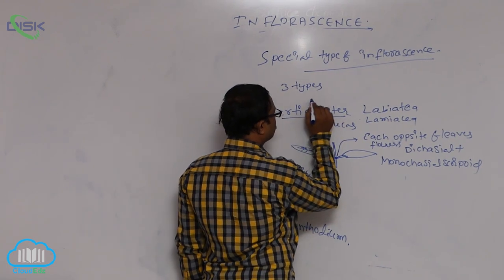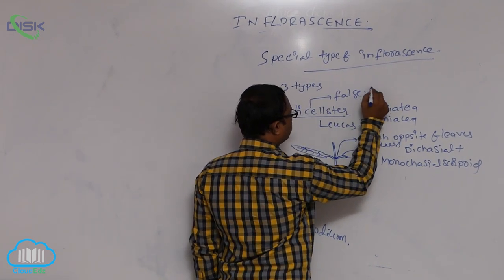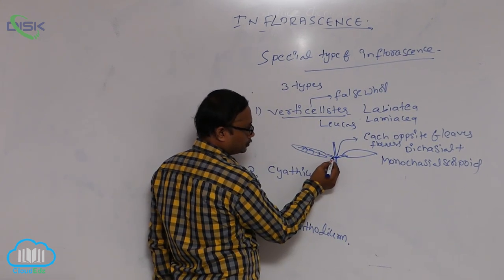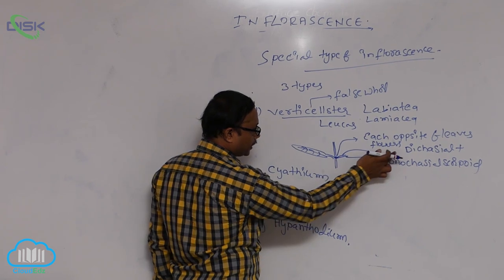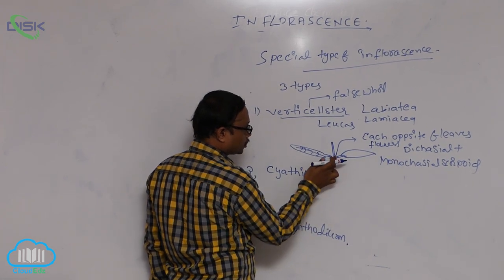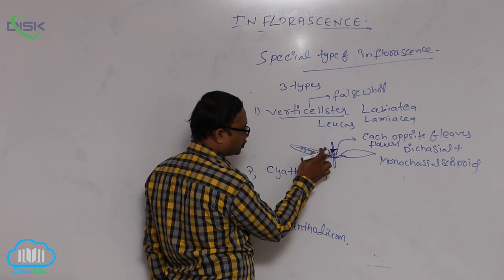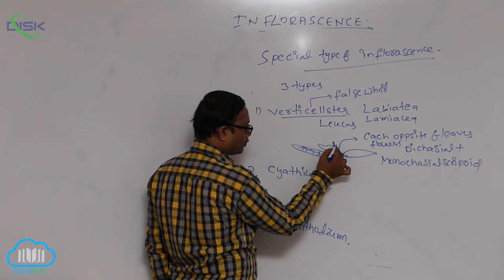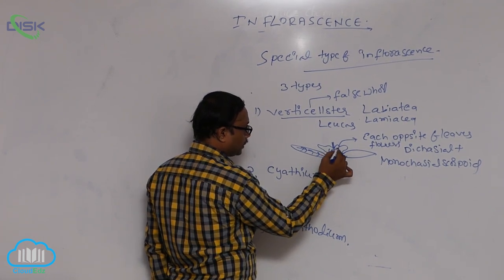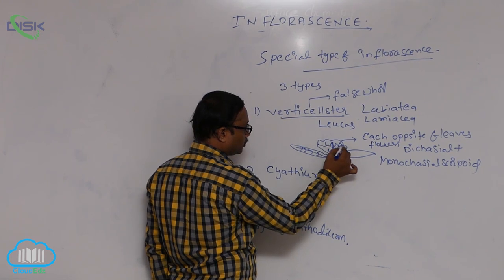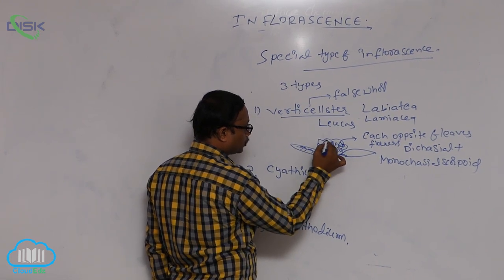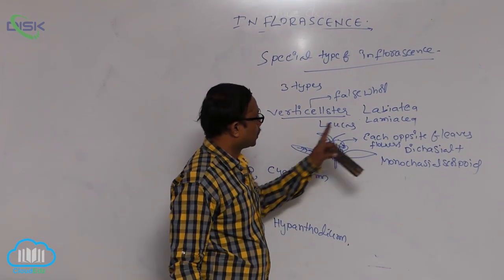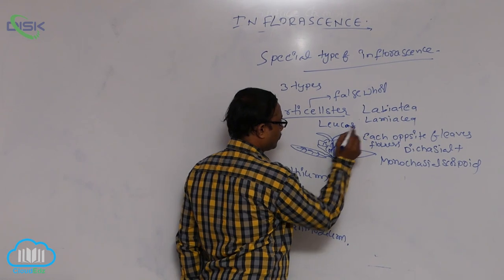Verticillaster means it is known as a false whorl. At every node, at each opposite of leaves, flowers form dicasial plus monocasial arrangement. This total inflorescence is combined at the center to form a whorl-like structure around that node — that is known as verticillaster. Example is Leucas, Lamiaceae family.